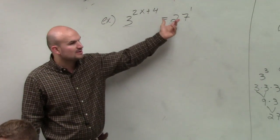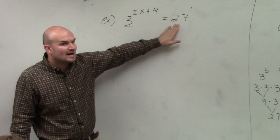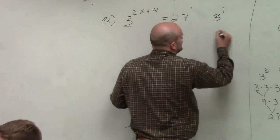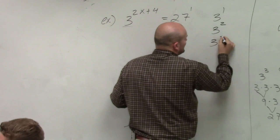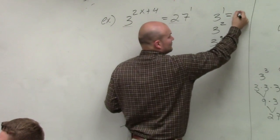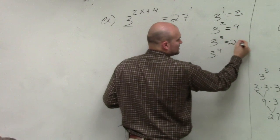You always want to go from the larger number to see if you can rewrite it as the smaller base. Can I rewrite 27 with a base of 3? So you go down the list: 3 to the first is 3, 3 squared is 9, 3 cubed is 27.